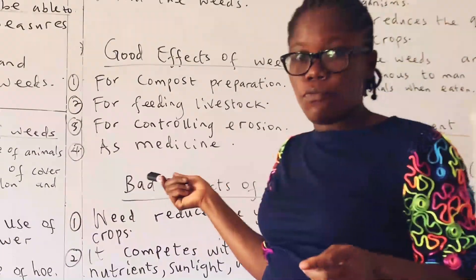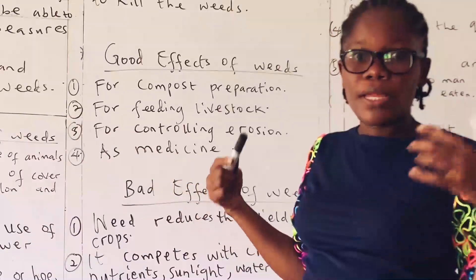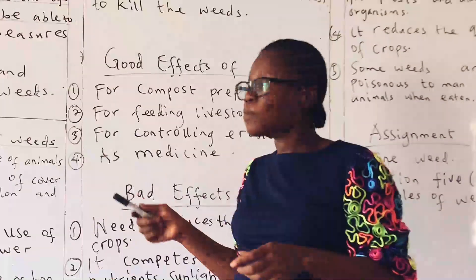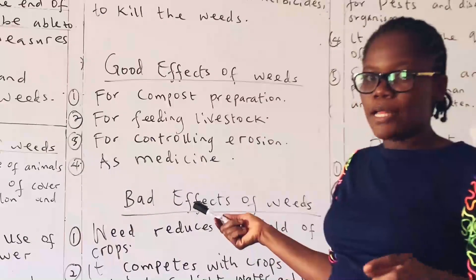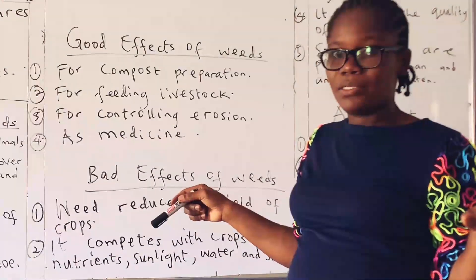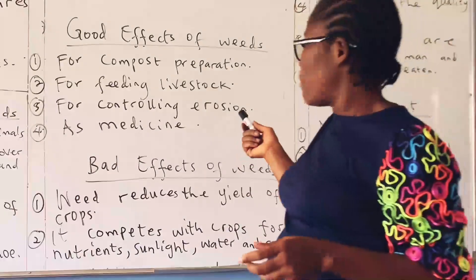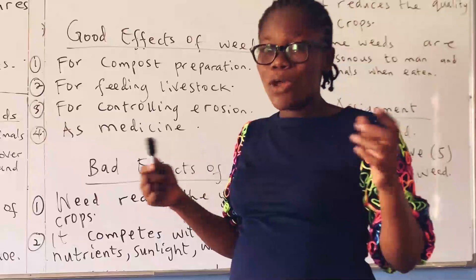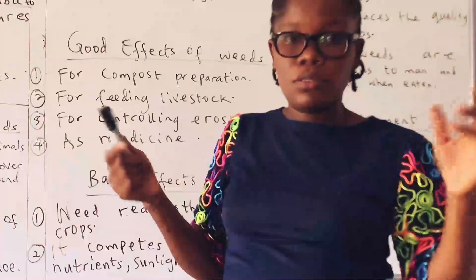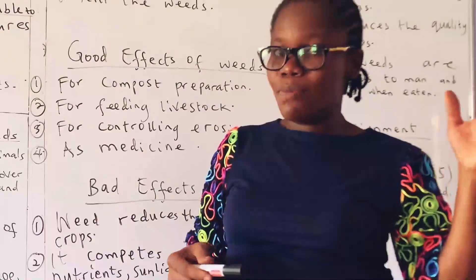The next good effect is for feeding livestock. Remember, livestock are simply farm animals that feed on these grasses — for example, the ruminants like the sheep and the goats. Then we have another effect: controlling erosion. For example, carpet grass helps to hold soil particles together in order to prevent the washing away of the surface of the soil by rainwater. Also, some weeds are used as seeds — for example, the Siam weed, and many other kinds of weeds also serve as seeds.